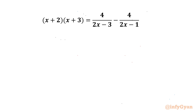Here we are solving (x+2)(x+3) = 4/(2x-3) - 4/(2x-1). Let us get started by writing our denominators cannot be 0. So our answer cannot be 3/2 and 1/2.